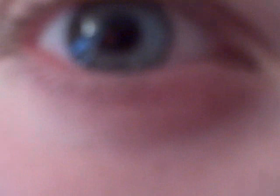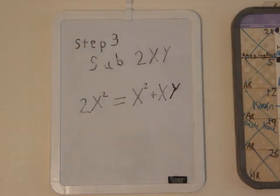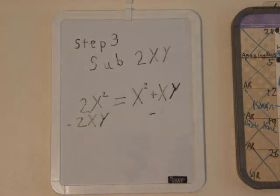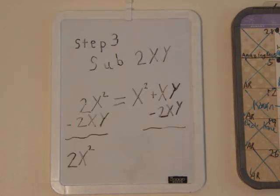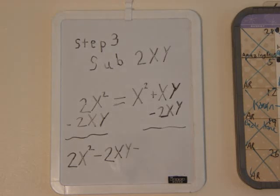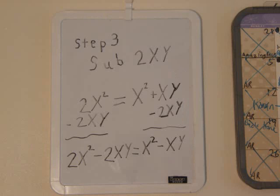Step 3 is to subtract 2xy from each side of the equation. On the left side of the equation, we do not have any like terms, so it stays the same. On the right side, xy minus 2xy will give us a negative xy.